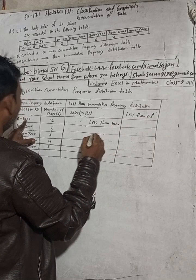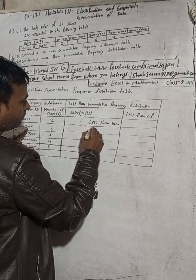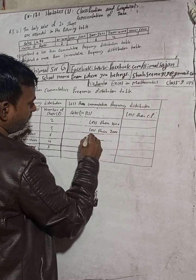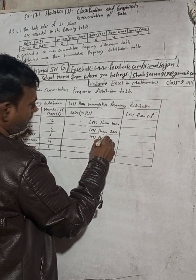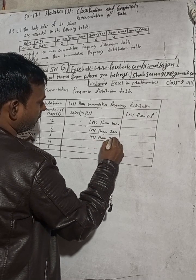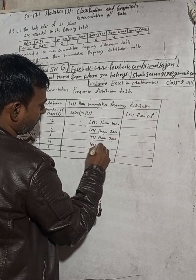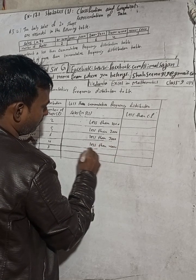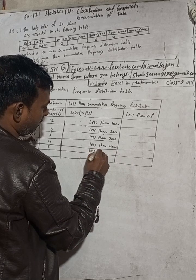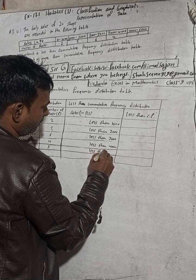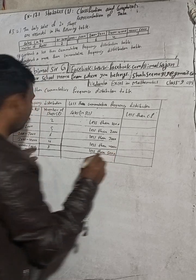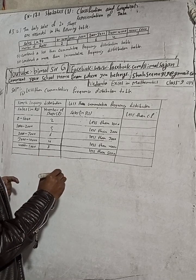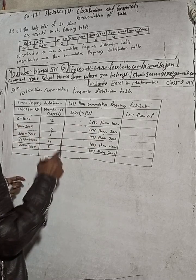So I will write: less than 1000, less than 2000, less than 3000, less than 4000, and less than 5000. Okay, this part is finished — we have written the sales column for the less than cumulative frequency table.